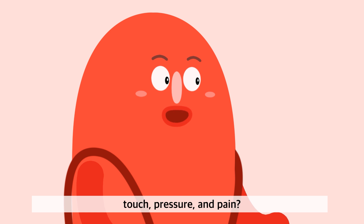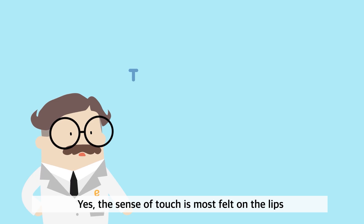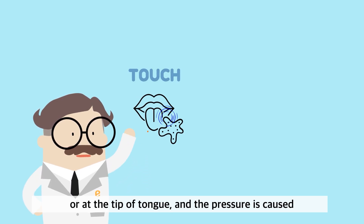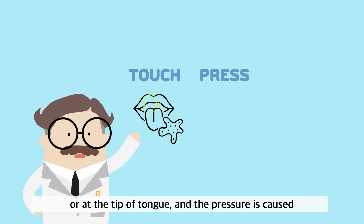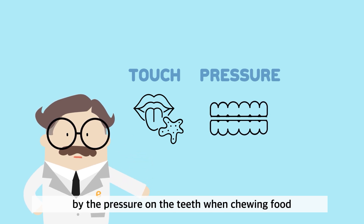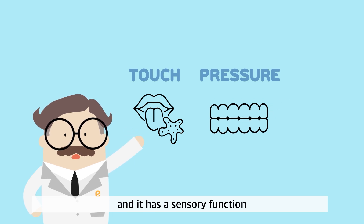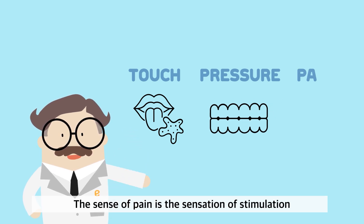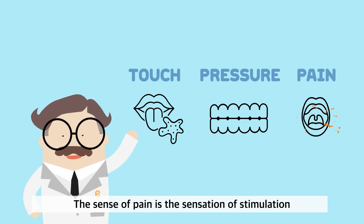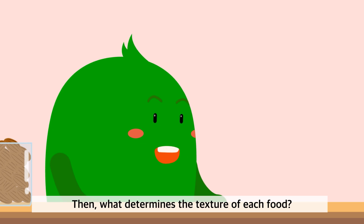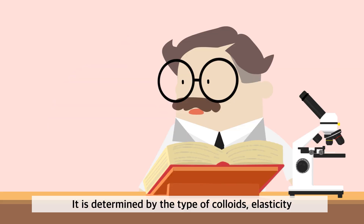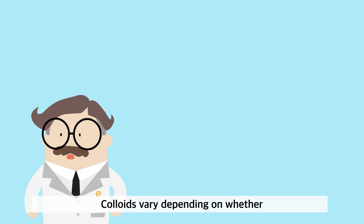Touch, pressure, and pain? Yes — the sense of touch is most felt on the lips or at the tip of the tongue, and pressure is caused by the force on the teeth when chewing food. The root of the tooth has a fascia with a sensory function. The sense of pain is the sensation of stimulation. What determines the texture of each food? It's determined by the type of colloids, elasticity, and viscosity of the food.